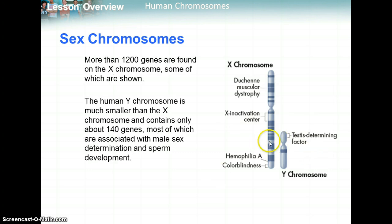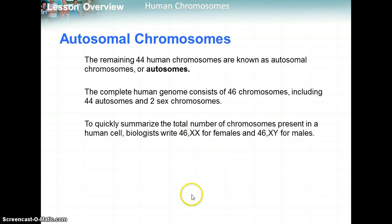Looking at the differences between X and Y: there are more than 1,200 genes found on the X chromosome, which is the bigger one. The Y chromosome is much smaller and contains only about 140 genes, most of which are associated with male sex determination. There is one gene in particular, the SRY gene, that is involved with sex determination and also sperm development. The remaining 44 human chromosomes are known as autosomal chromosomes, or autosomes — everything besides your sex chromosomes. So the complete human genome consists of 46 chromosomes: 44 autosomes and 2 sex chromosomes.